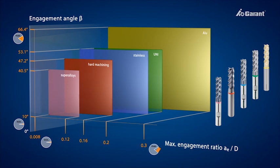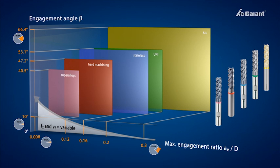To keep the average chip thickness constant, as the engagement ratio becomes less, we have to increase VF.